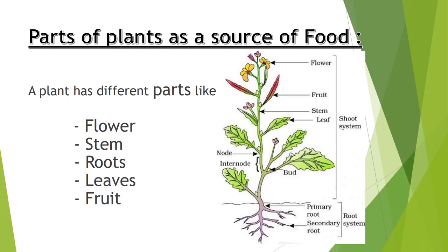Let us first of all learn about parts of plants which act as a source of food. A plant has different parts like flower, stem, roots, leaves, and fruit, which you can clearly see from the diagram.